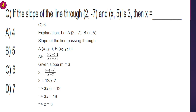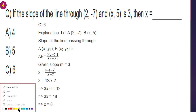Slope is given as 3. So 3 equals (5 minus (minus 7)) by (x minus 2), which gives 3 equals 12 by (x minus 2). Cross multiplication: 3x minus 6 equals 12, so 3x equals 18, x equals 6. Option C is the right answer.